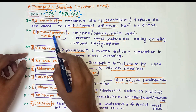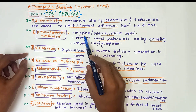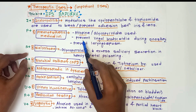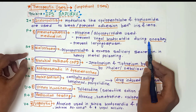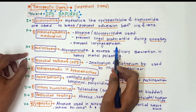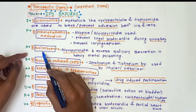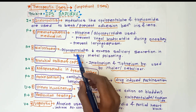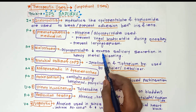As pre-anesthetic medication, atropin or glycopyrrolate are used. They prevent vagal bradycardia during anesthesia and also prevent laryngospasm. For sialorrhea, glycopyrrolate is used; it decreases excess salivary secretion, for example in heavy metal poisoning cases.